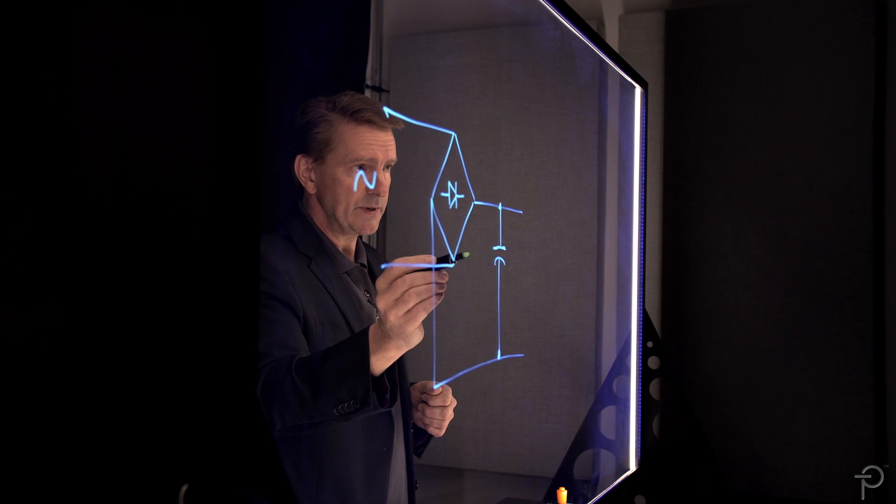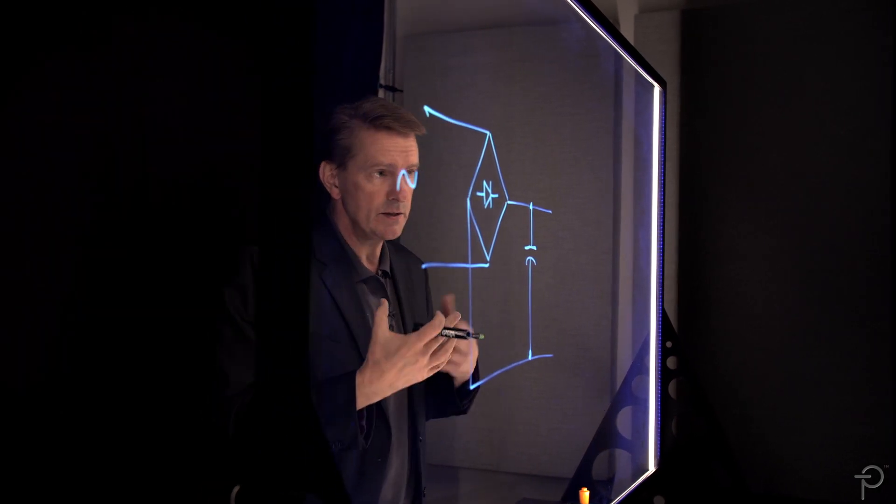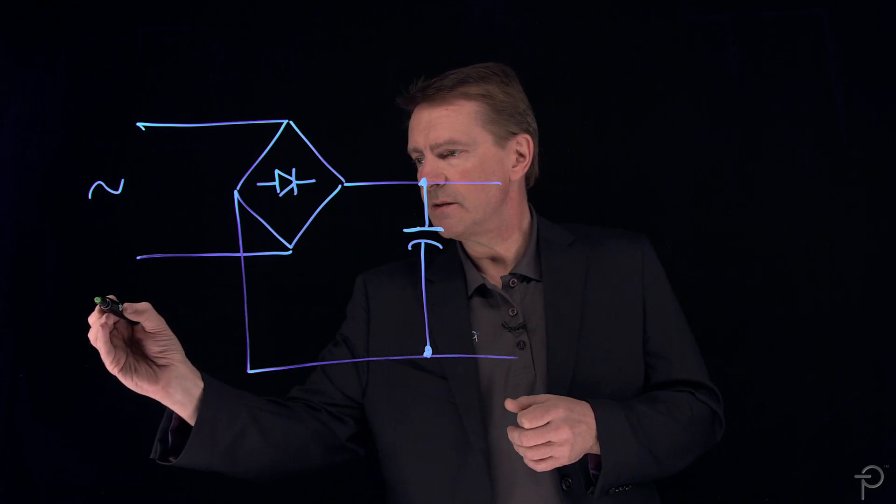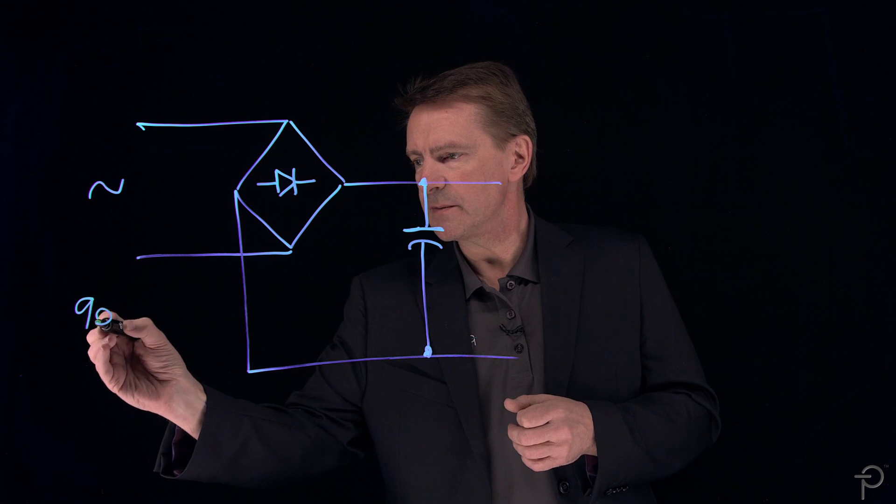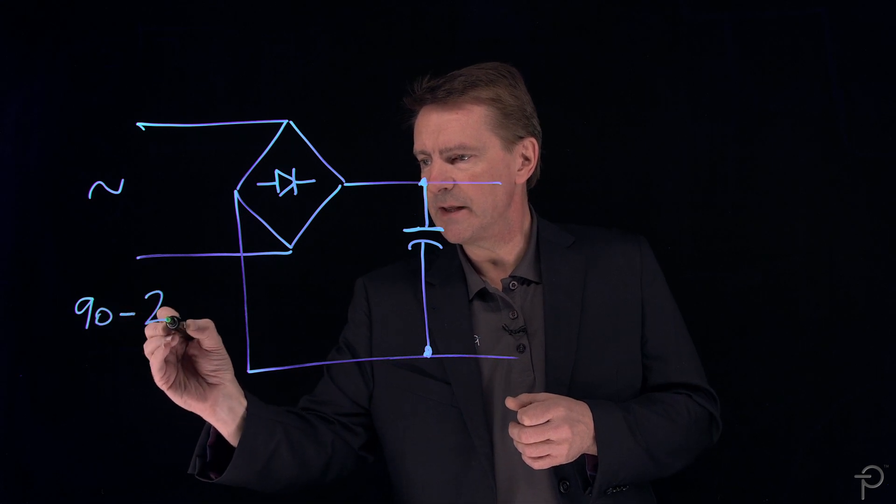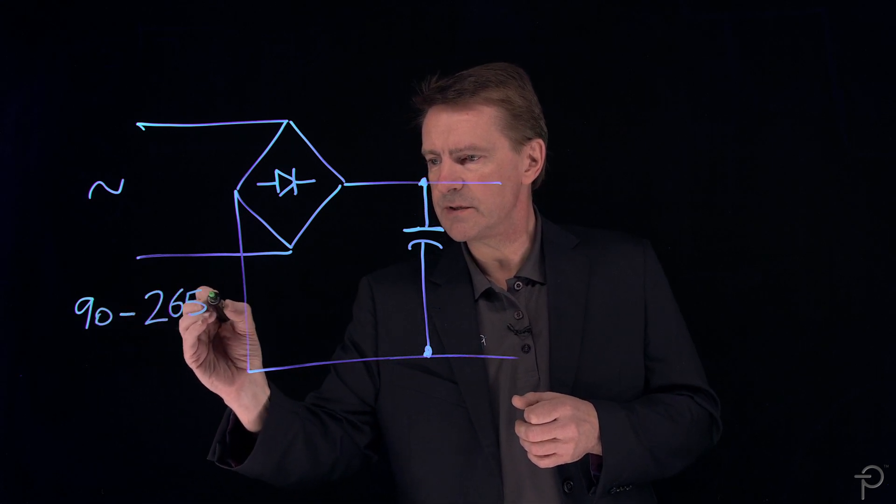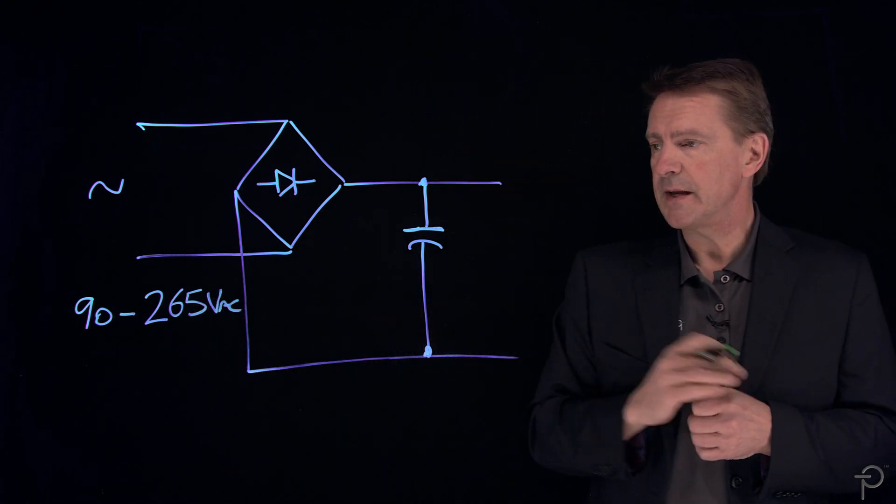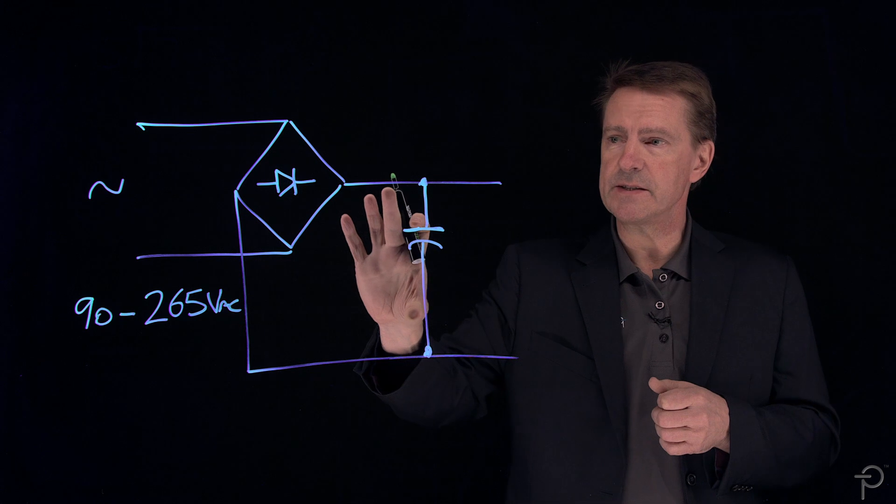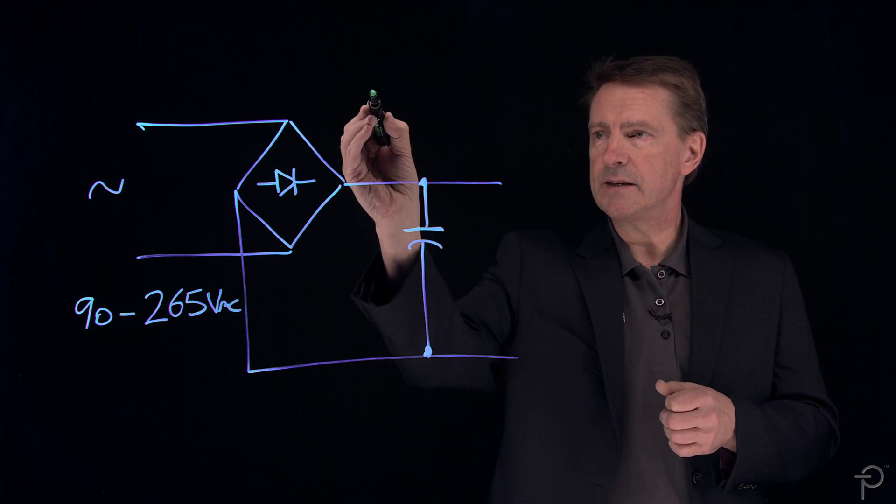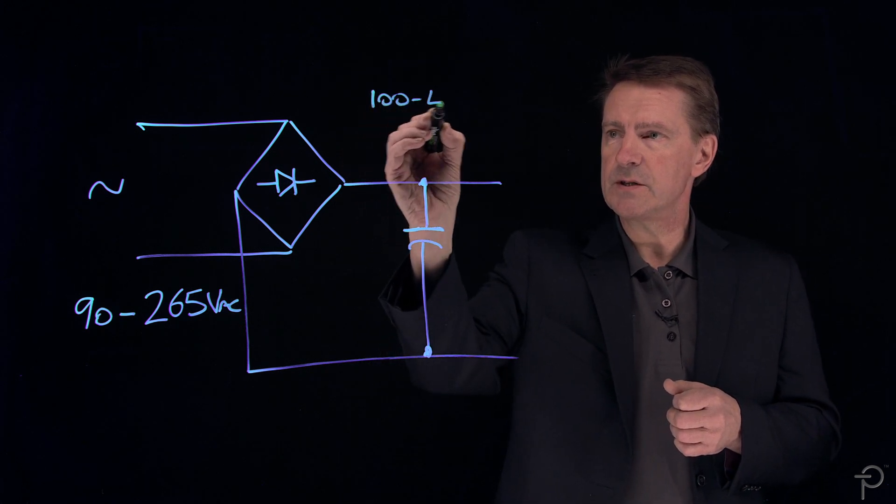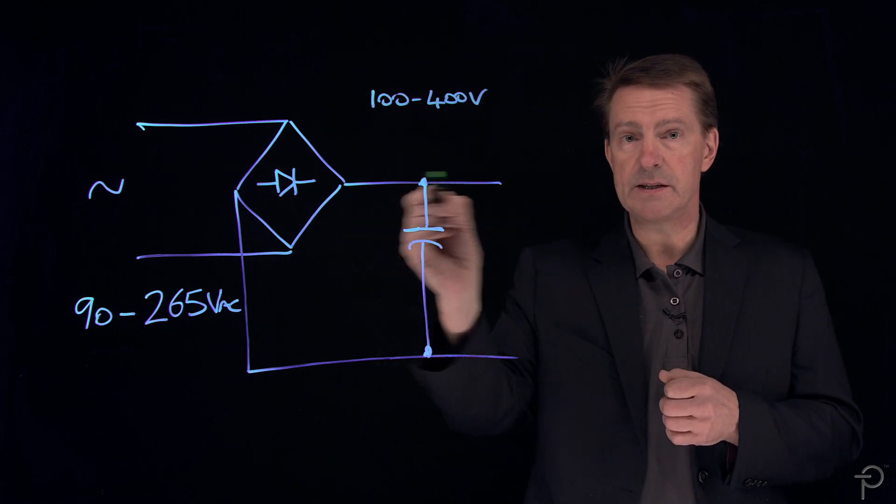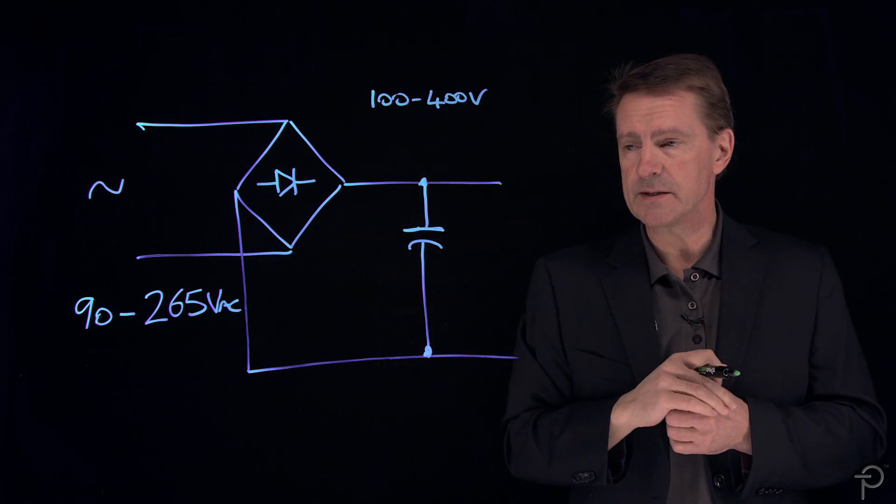Now, the challenge with this capacitor in terms of choosing it is that when you have a universal input power supply, the input voltage can be anything from 90 volts to 265 volts AC. And that translates on the rectified side to something like typically about 100 volts to 400 volts on the DC rail, depending on the size of this capacitor.